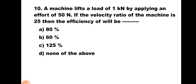Question number 10: A machine lifts a load of 1 kilo Newton by applying an effort of 50 Newton. If the velocity ratio of the machine is 25, the efficiency will be — A) 80%, B) 60%, C) 125%, D) none of the above. Use the formula: percentage efficiency = W × 100 / (P × VR). Substituting the values gives 80%. Hence the correct answer is A) 80%.